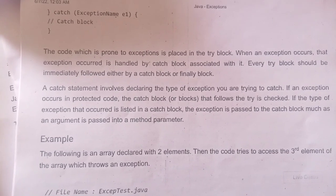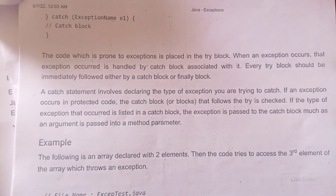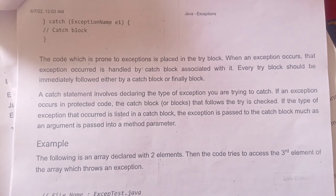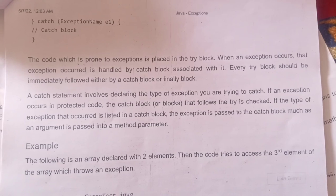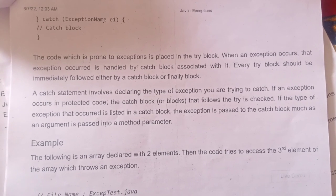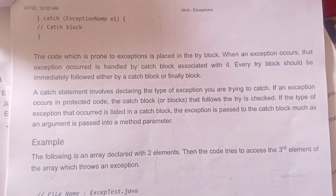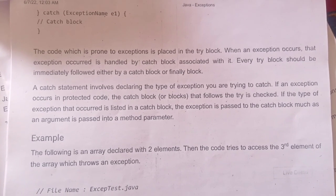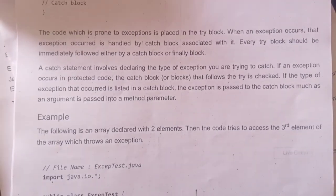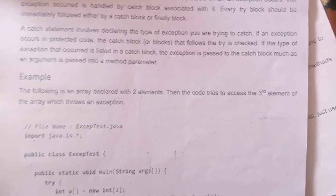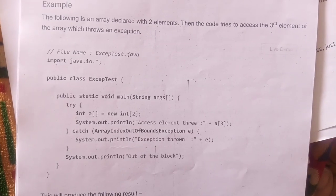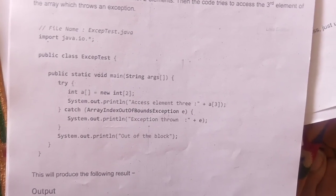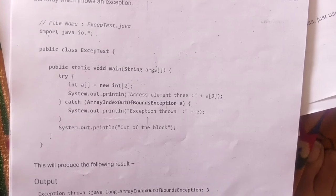Example: The following is an array declared with two elements. Then the code tries to access the third element of the array, which throws an exception as shown. This will produce the following result.